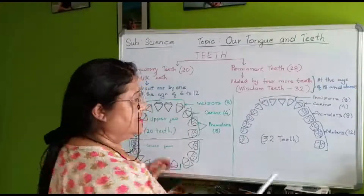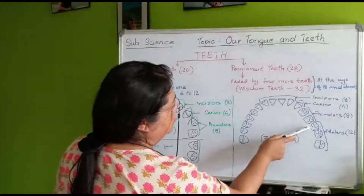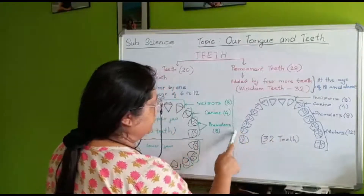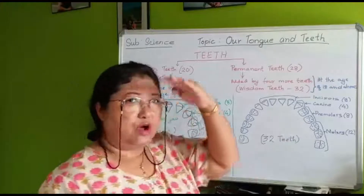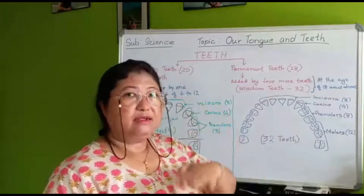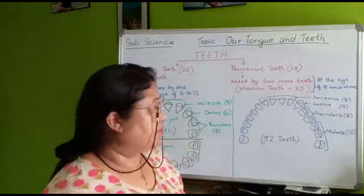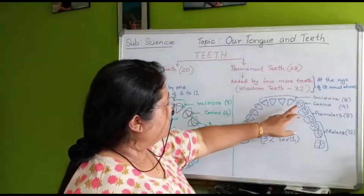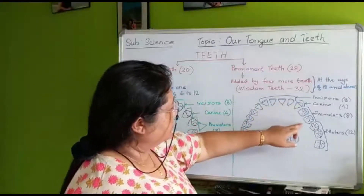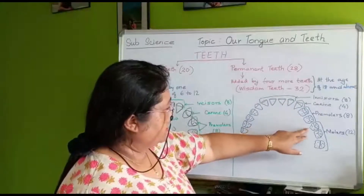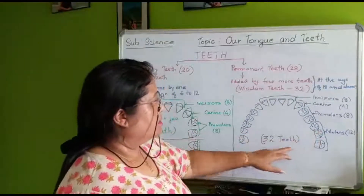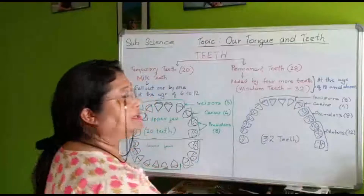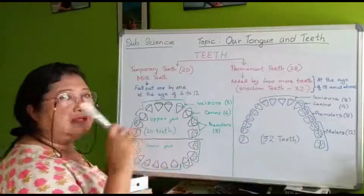We have six molar teeth on the upper jaw — three on each side — and six on the lower jaw, making 12 molar teeth in total. So for permanent teeth: incisors, canines, pre-molars — two premolars on each side — plus the molars. All together we have 32 teeth. This is all about permanent teeth and temporary teeth.